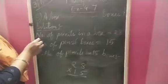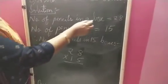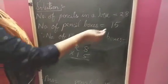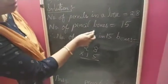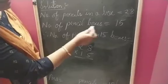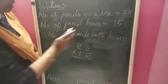Let's start our solution. Number of pencils in a box. How many pencils are there in a box? 28 pencils. Number of pencil boxes. How many pencil boxes are there? 15 pencil boxes are there.